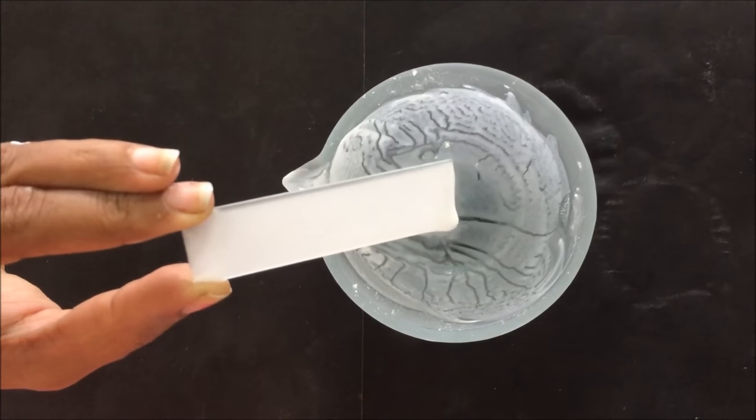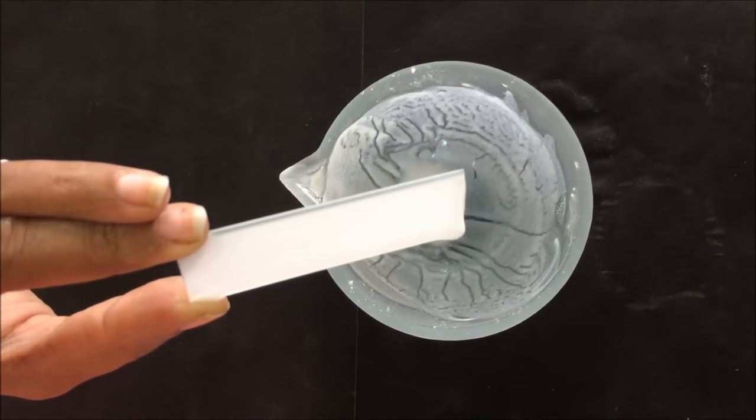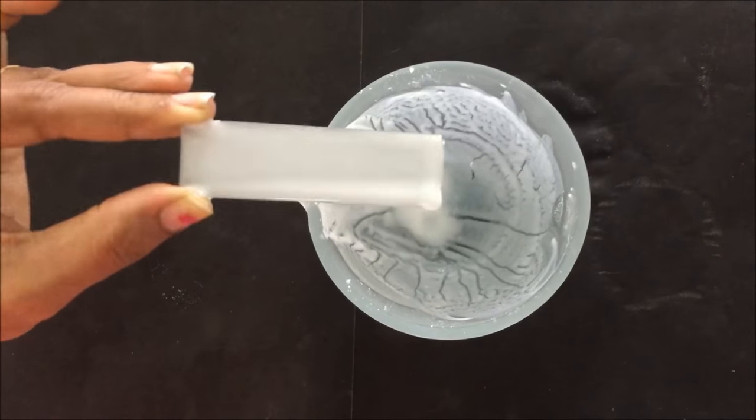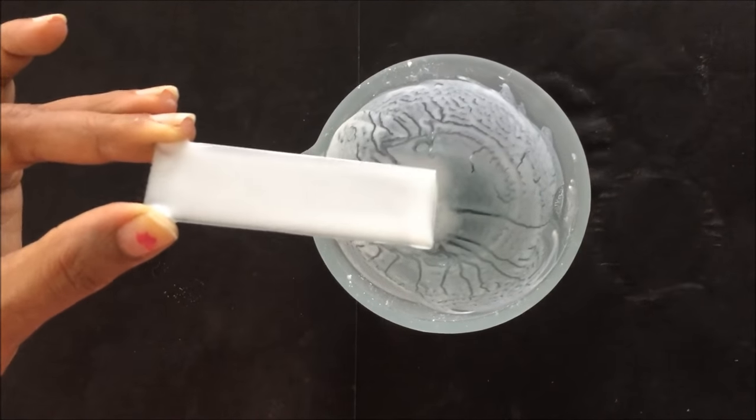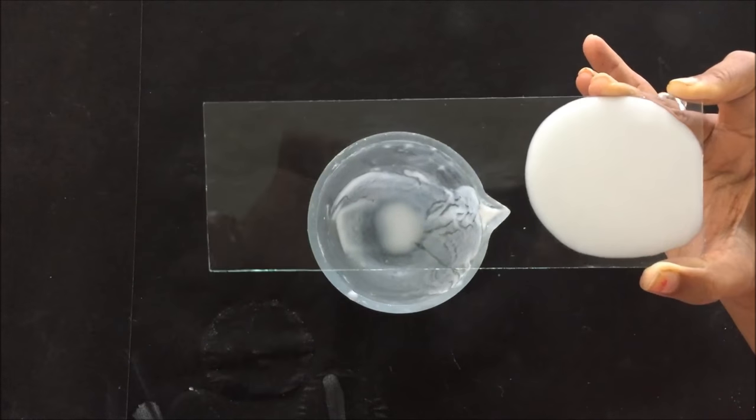Make sure that there should not be any uneven spot on the plate and remove the excess slurry over the plate. Similarly, you can follow the same procedure to coat the big size glass plate with the slurry.